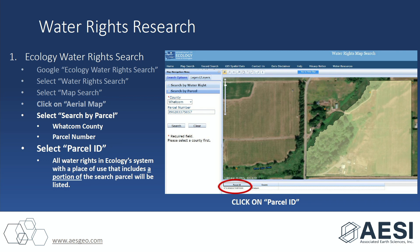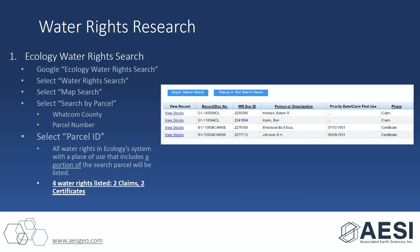Now it's going to search all of Ecology's website for all of the water rights that might be appurtenant to your parcel. You're going to select the parcel ID at the bottom, and it's going to give you a list of the water rights found on that parcel. In this search, it's found two claims and two certificates.